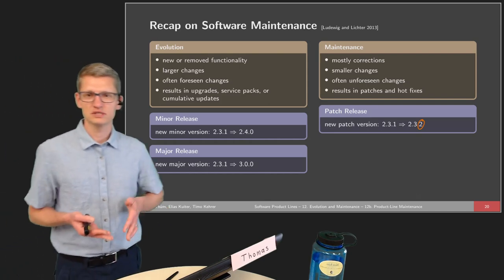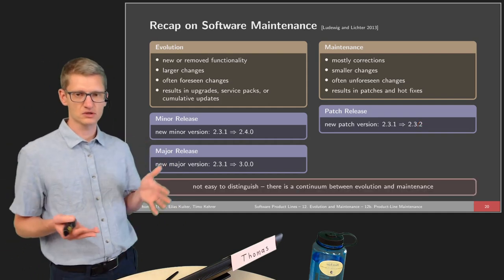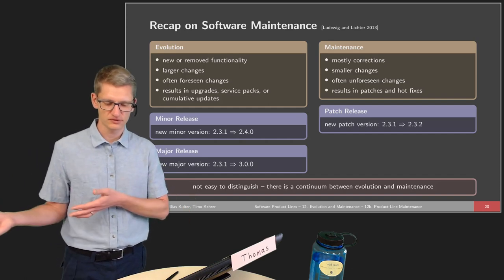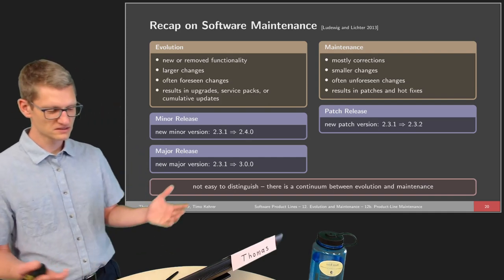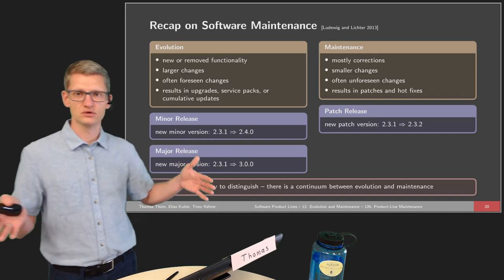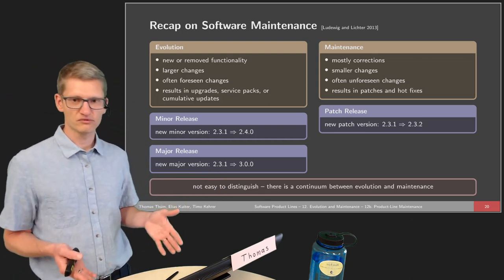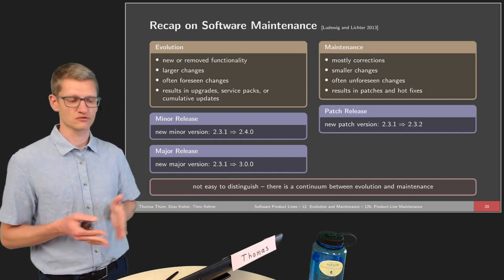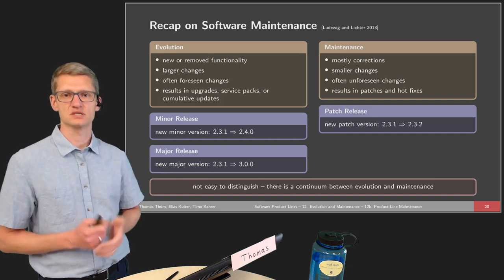Even though this classification helps, there's no clear boundary between evolution and maintenance. It's not always easy to distinguish whether something is evolution or maintenance, foreseen or unforeseen. Rather, it's a continuum between the two, and this lecture file is even called 'Evonance' to reflect that continuum. Whenever we make changes to software, we are somewhere in this continuum — sometimes closer to evolution, sometimes to maintenance.